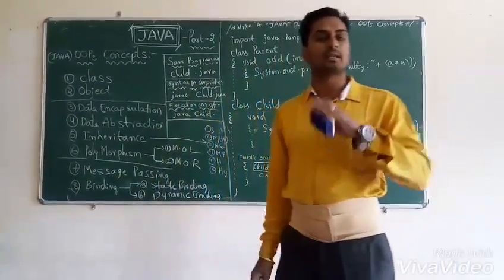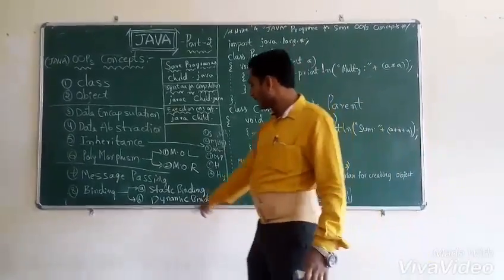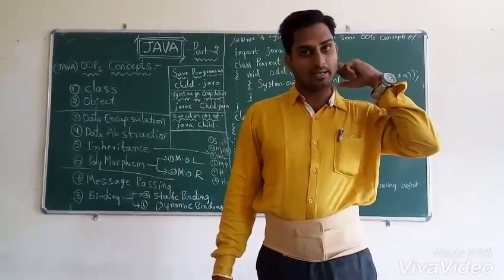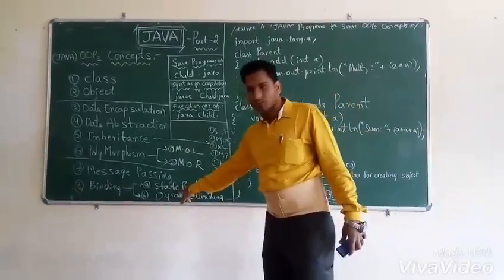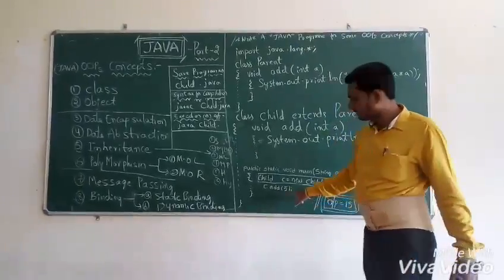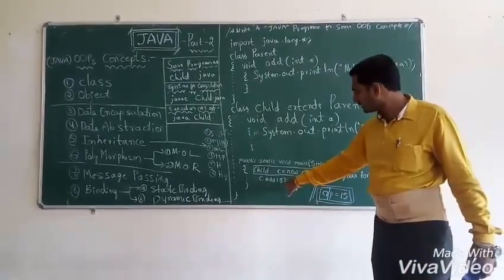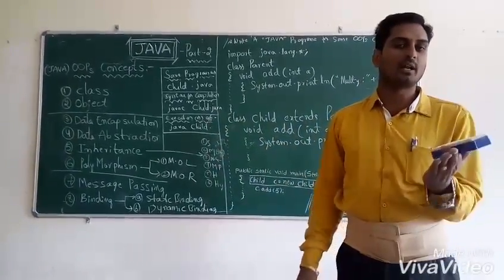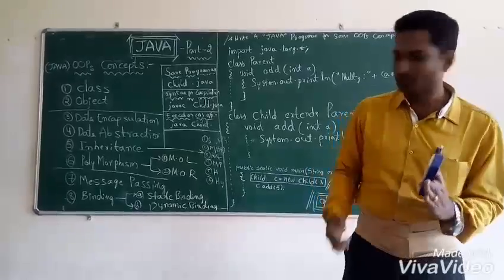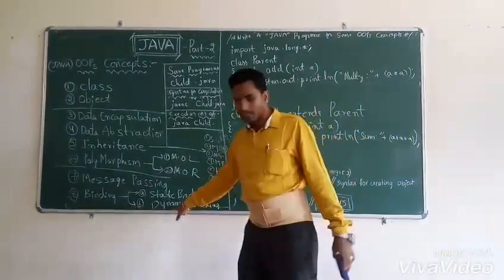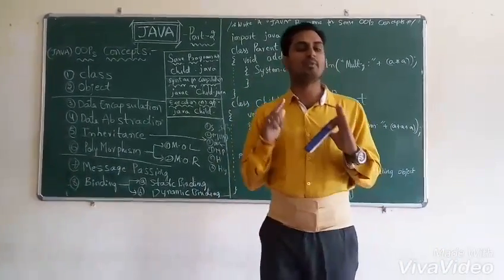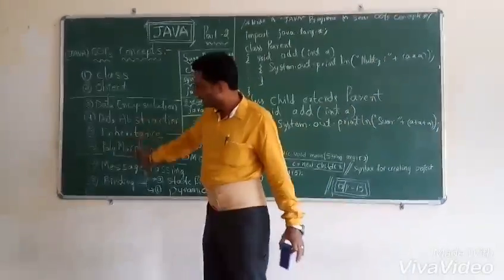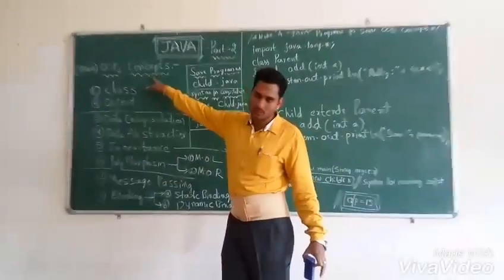Binding has two types: static binding and dynamic binding. Static binding means values are passed at compile time — if you want to add two numbers, you give constant values at compile time; that is static binding. Dynamic binding means values are given at run time. These are the topics of OOPS concepts.